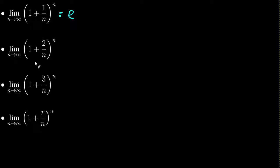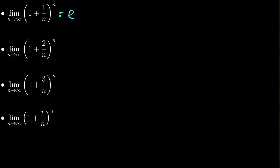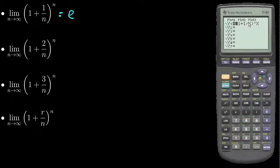Now what happens if I try something a little bit different and put 2 over n? Let me go back to the calculator and see what's happening. If I change this from 1 over n to 2 over n, I get this thing that seems to be approaching 7.389. Well, what is 7.389 other than e squared?